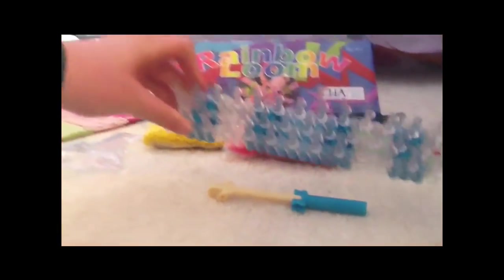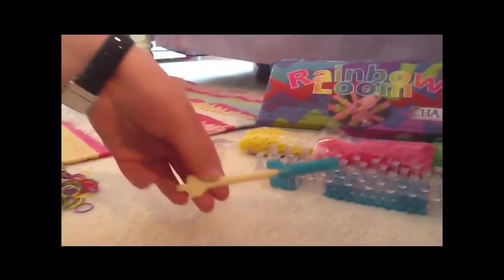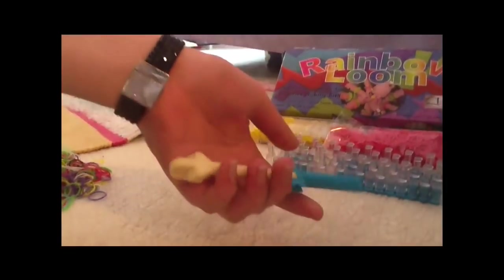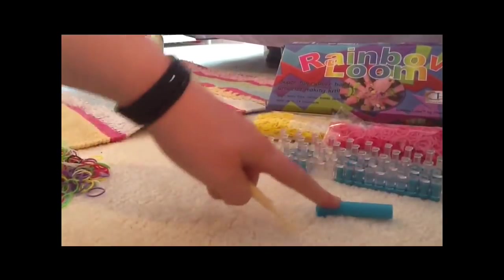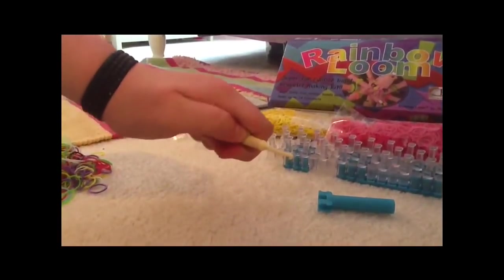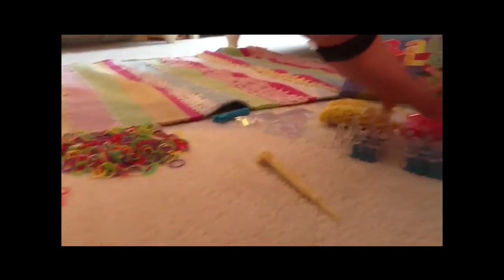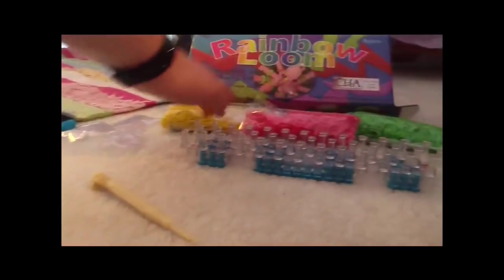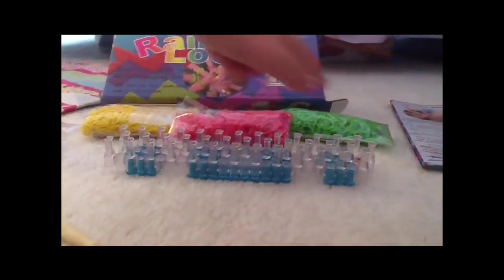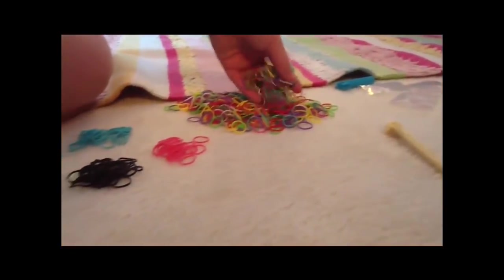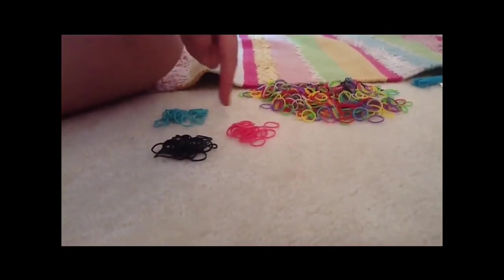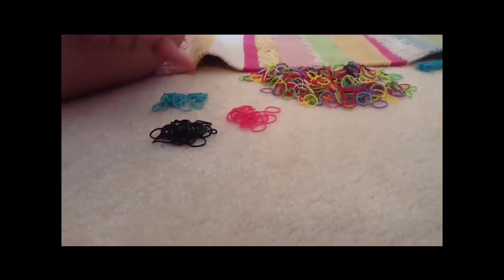So the rainbow loom comes with this. And to do what we're doing today, you're going to have to take that off and use this part, which is a hook. It doesn't come with these three colors, the yellow, pink, and green, but it comes with a pack like that with all these rainbow colors. We separated the pink, blue, and black because those are the colors we're going to be using today.